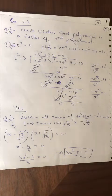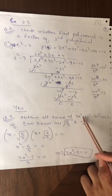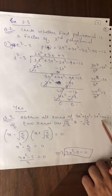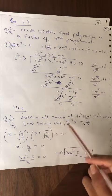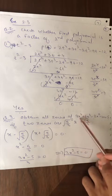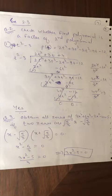Now see question number 3 — the most important question from the exam point of view. Obtain all zeros of 3x⁴ + 6x³ - 2x² - 10x - 5, if two of the zeros are √(5/3) and -√(5/3). The polynomial has power 4, so there will be 4 values of x in total.